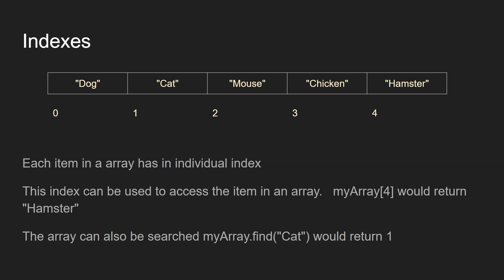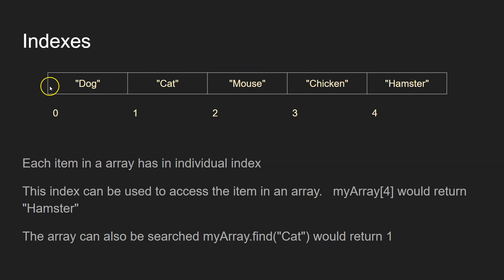An array is a collection of elements and they all have to be of the same data type. If you look at it here, we've got one, two, three, four, five elements here and they're all the same data type because they all contain alphanumerical values.